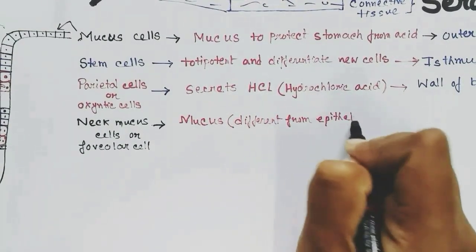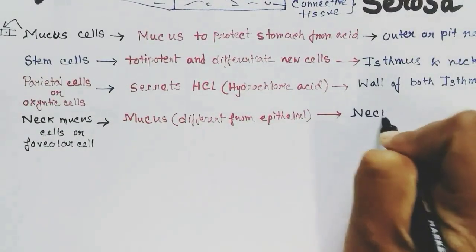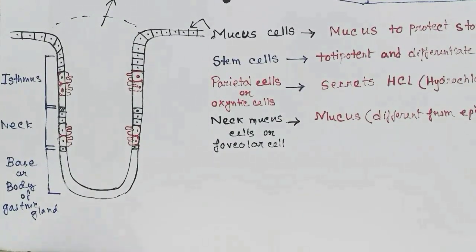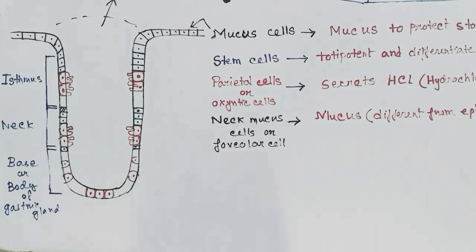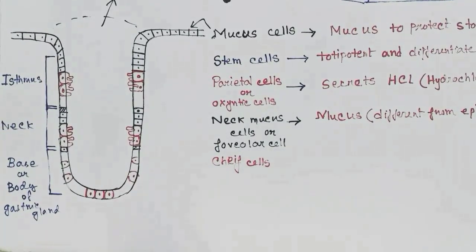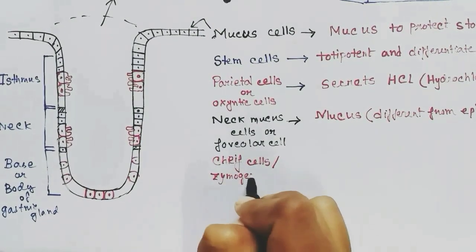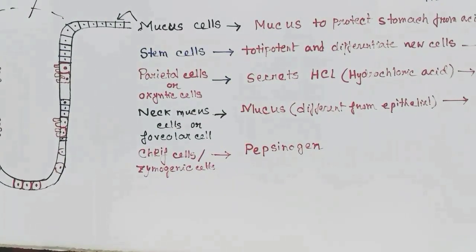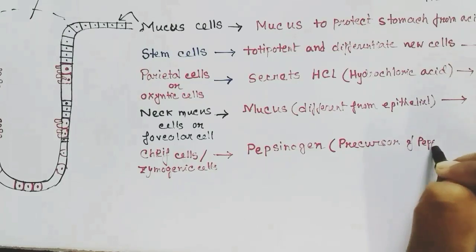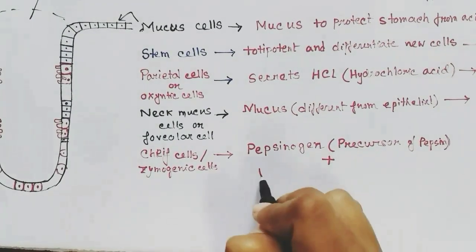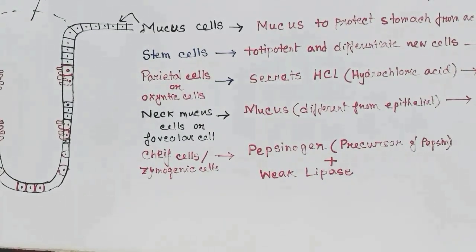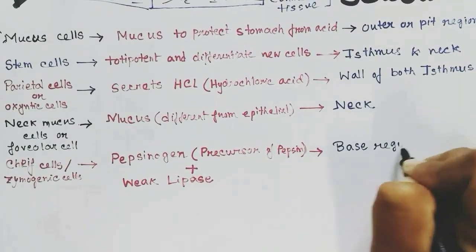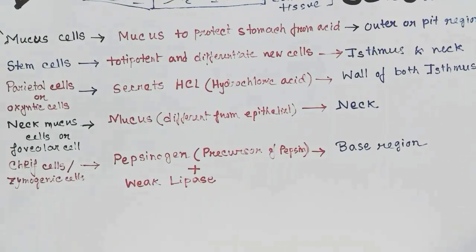The next important cells are chief cells, also called zymogenic cells, present at the base or body region of the gastric gland. These cells release pepsinogen, which is a precursor for pepsin. Pepsinogen becomes pepsin in an acidic environment and helps in digestion of protein. Chief cells also release weak lipase to digest lipids. Chief cells are mainly present in the base region.